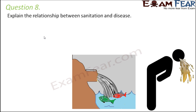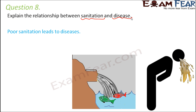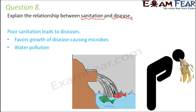Question number 8: Explain the relationship between sanitation and disease. Sanitation is about maintaining a proper sewage system. Poor sanitation can lead to many diseases by favoring the growth of disease-causing microorganisms like bacteria and viruses. Poor sanitation can also lead to water pollution, harming aquatic life. It can cause soil pollution as well, since water and soil are linked, and polluted soil hampers plant growth.